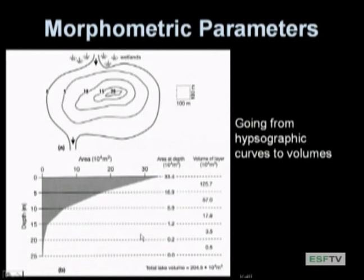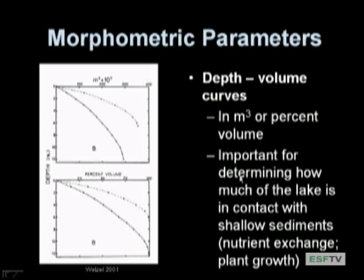Similarly, you can plot depth-volume curves — the same backwards graphs going from surface to bottom, with volume or percent volume on the x-axis instead of area. The shape of these curves tells you how much of the lake's volume is in contact with shallow sediments. Lakes with shallower slopes have more volume exposed to shallow, lit sediments, leading to greater plant growth — weedier lakes — compared to those with less lighted volume at the surface.